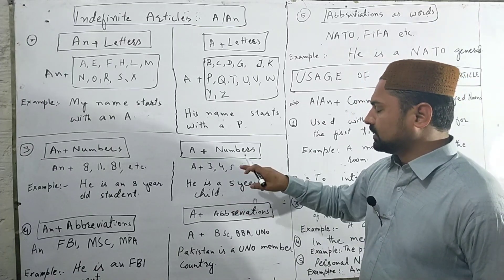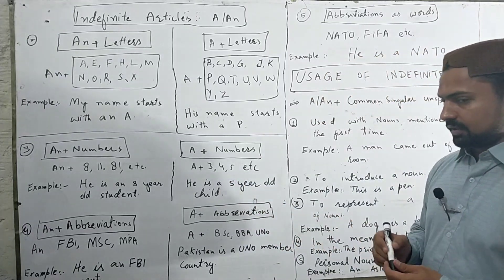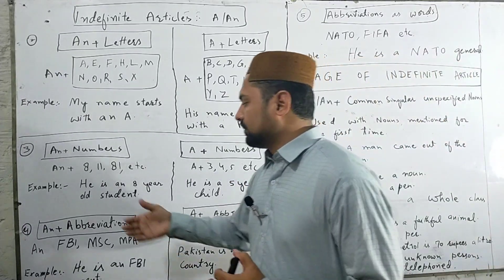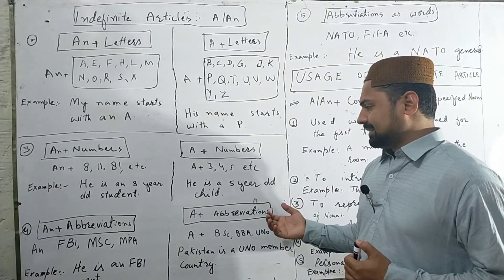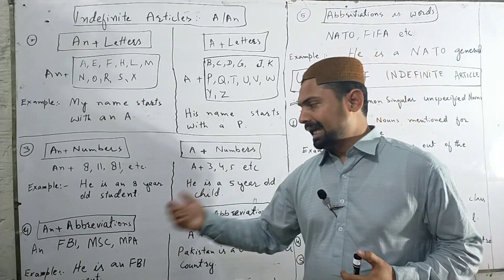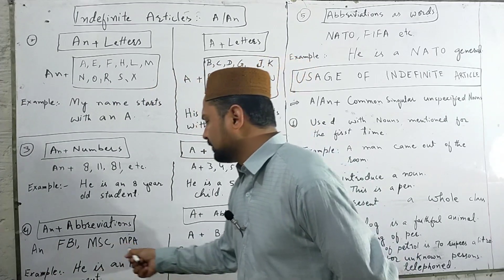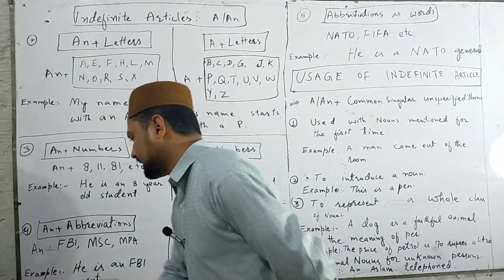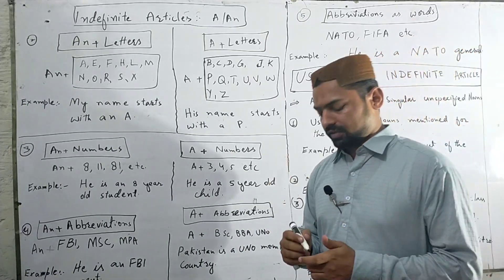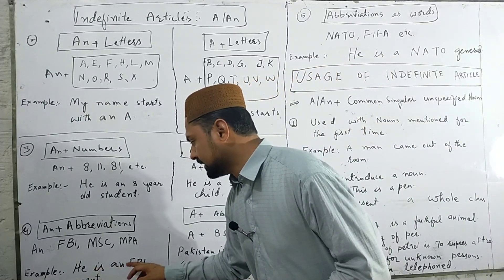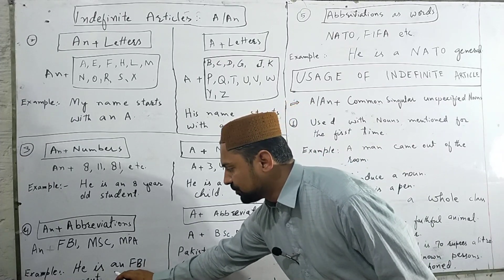With abbreviations, we use A or AN based on the consonant or vowel sound of the first letter. For example: FBI, MSC, MP. Since F has a vowel sound, we use AN — for example: he is AN FBI agent.